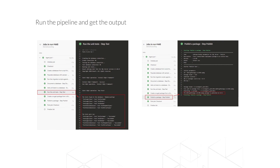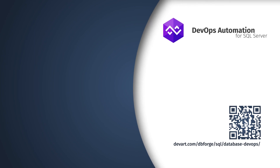After running the pipeline, you can view the outputs. The slide shows how the information is displayed after each step in the pipeline is completed. In this example, after the pipeline execution, all the steps were completed successfully and the generated NuGet package was published. In this video, we demonstrated how to quickly and easily configure a pipeline in Microsoft Azure DevOps using the dbForge tools. Just download the dbForge DevOps automation solution and set up a safe and stable DevOps process. Thank you.